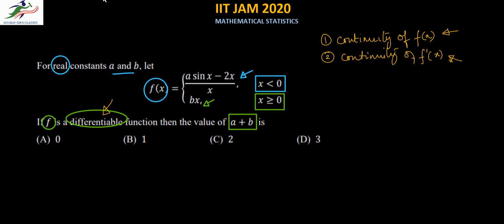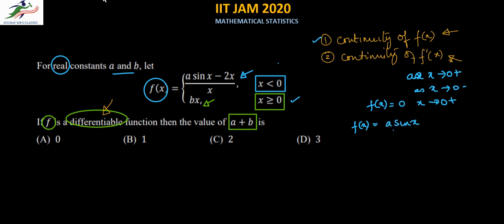Let us check the first condition: continuity of f(x). Since f(x) has two parts defined on two domains, we check the values as x tends to 0 from the positive side and from the negative side. From the positive side (x > 0), as x tends to 0, f(x) = bx equals 0. On the negative side, f(x) equals (a·sin(x) − 2x)/x, which we rewrite as a·sin(x)/x minus 2.